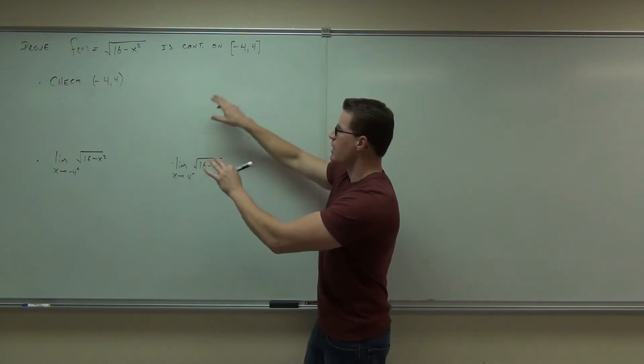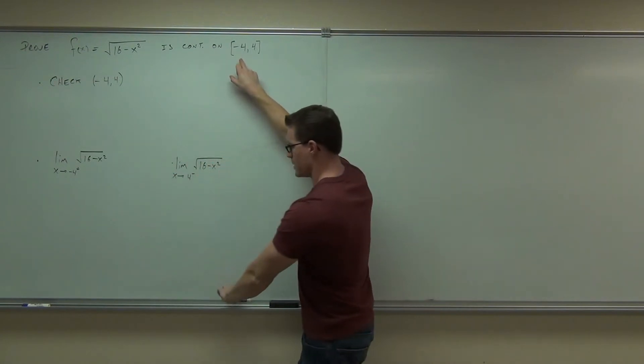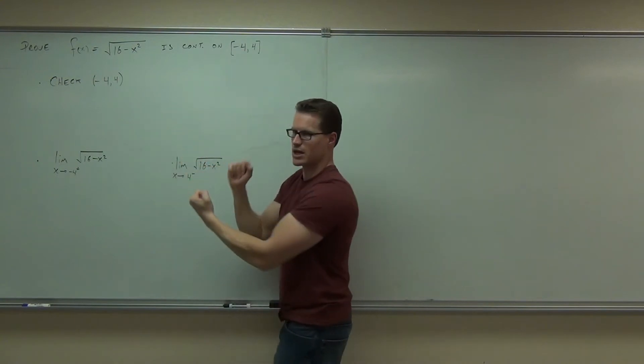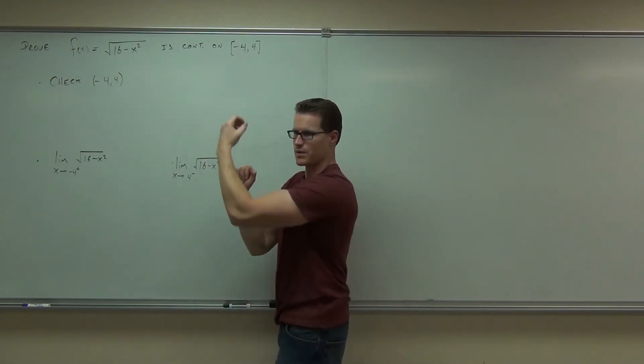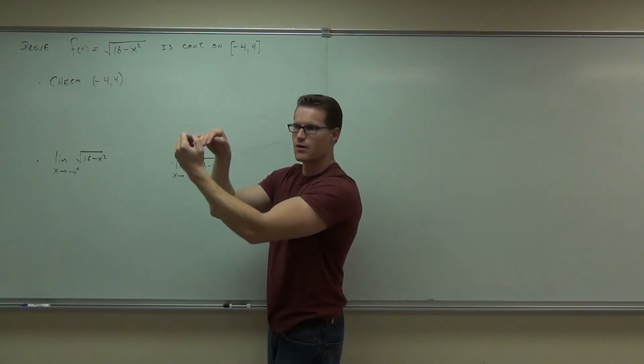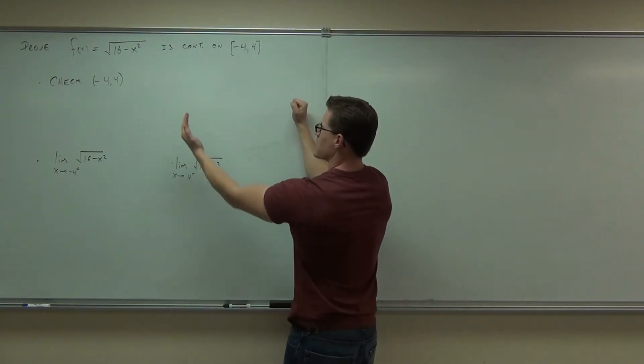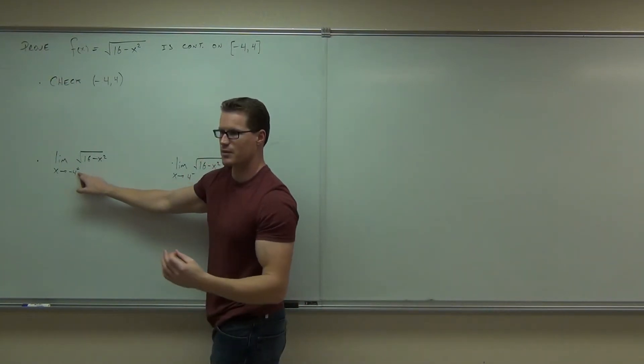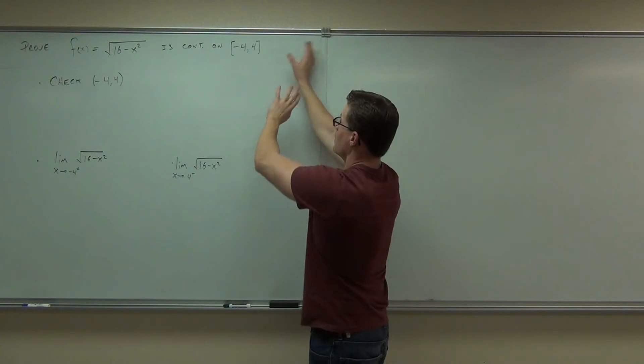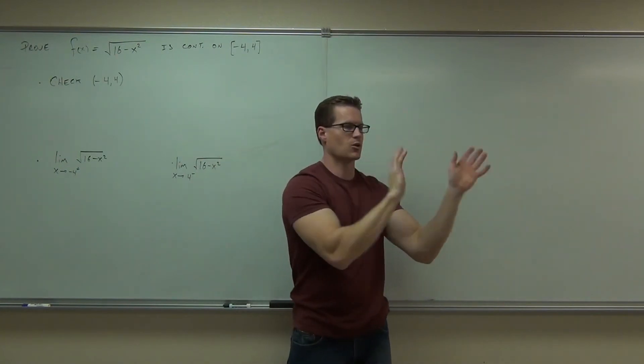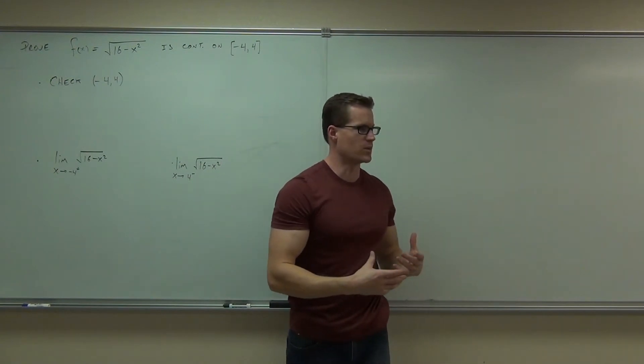I want you to understand the notation here. If we're going to check negative 4, understand that at negative 4 we're going to have to be coming from the right to check that. Because from the left nothing exists over here. So we have to be coming from the right. For positive 4, we're going to have to be coming from the left. That's where this from the left and from the right are coming from. There is nothing to check over here, it's from the left hand side. Do you understand the notation for our limits?